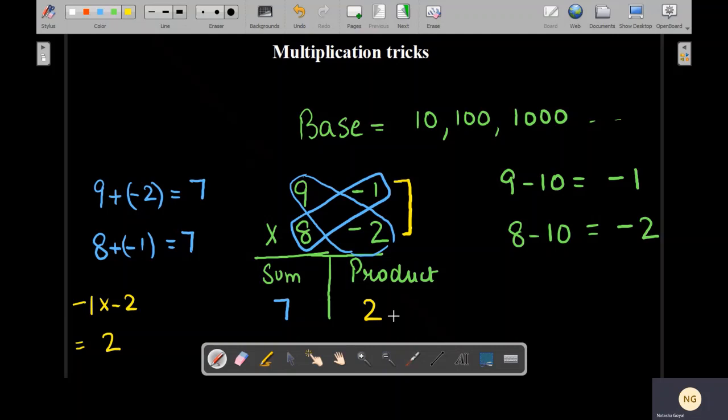So let's have a quick recap. First we have to check the base of the numbers. Then the second step is subtracting the base from the two numbers. Then we'll make a partition. We'll write the sum and we'll write the product.